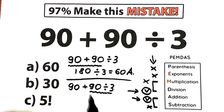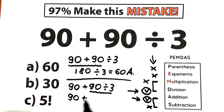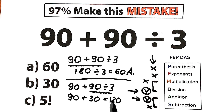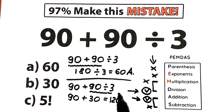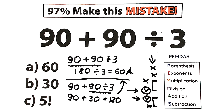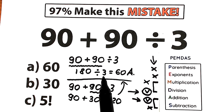So we should divide first: 90 divided by 3 equals 30. Therefore, 90 plus 90 divided by 3 equals 90 plus 30, which equals 120. Division comes first, and then addition is the last step — so the answer is 120.